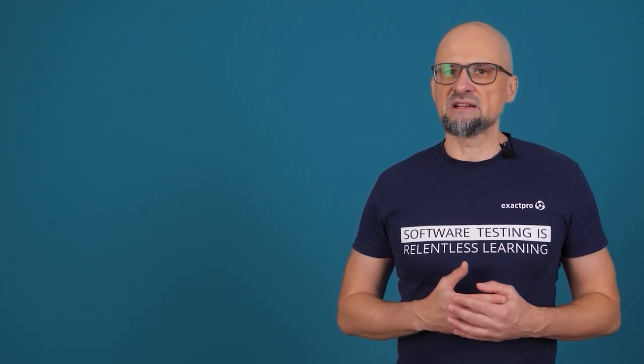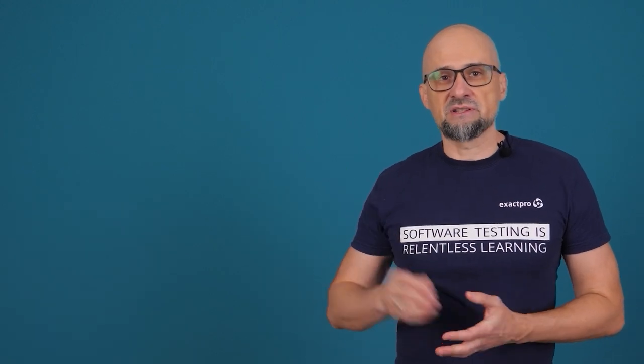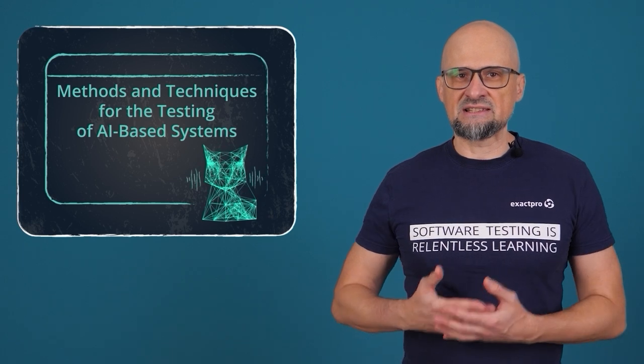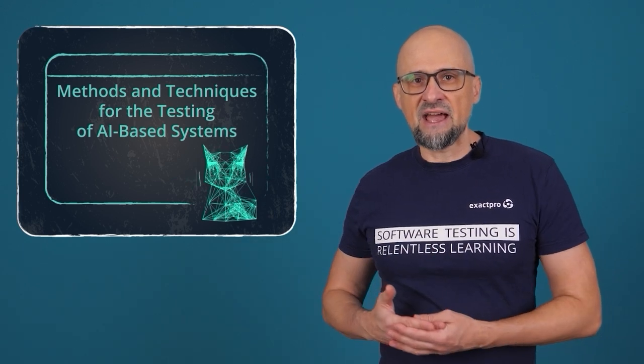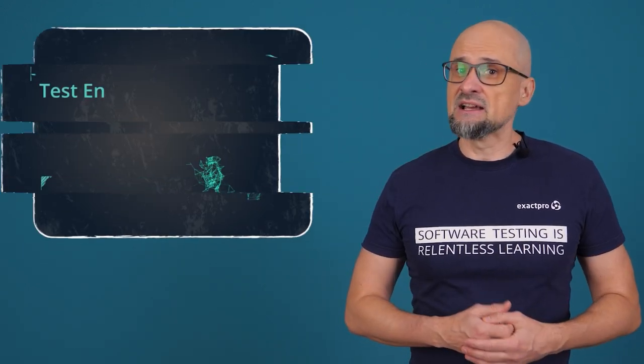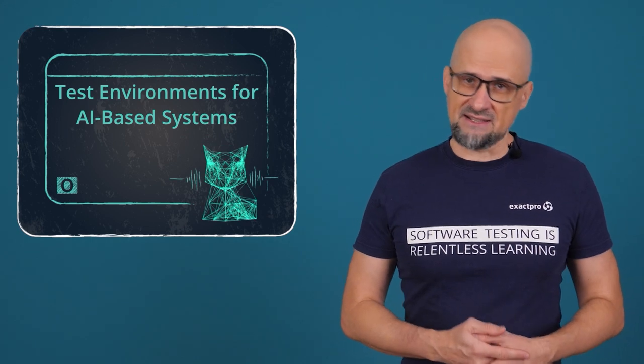We are continuing a series based on the ISTQB Certified Tester AI Testing syllabus. Today we will go over two chapters: Chapter 9, titled Methods and Techniques for the Testing of AI-based Systems, and Chapter 10, titled Test Environments for AI-based Systems.